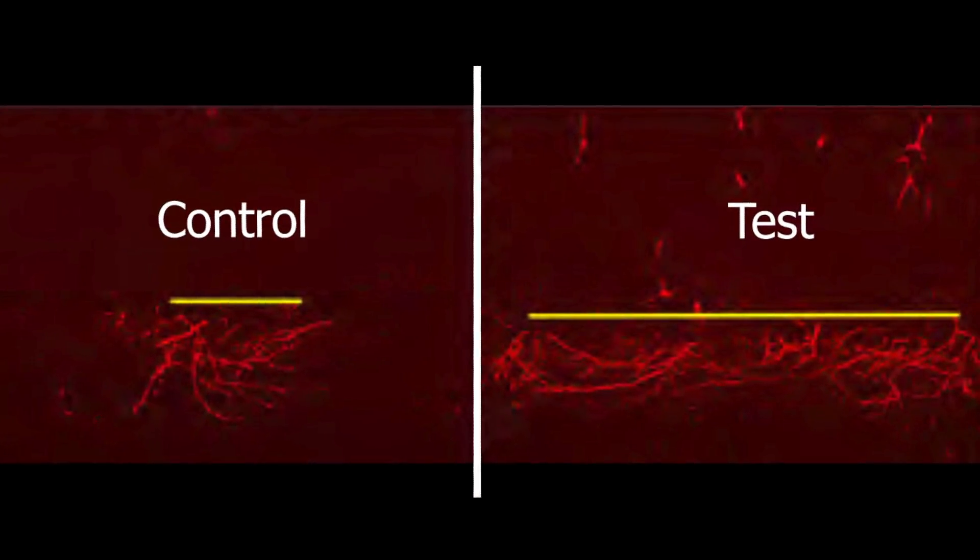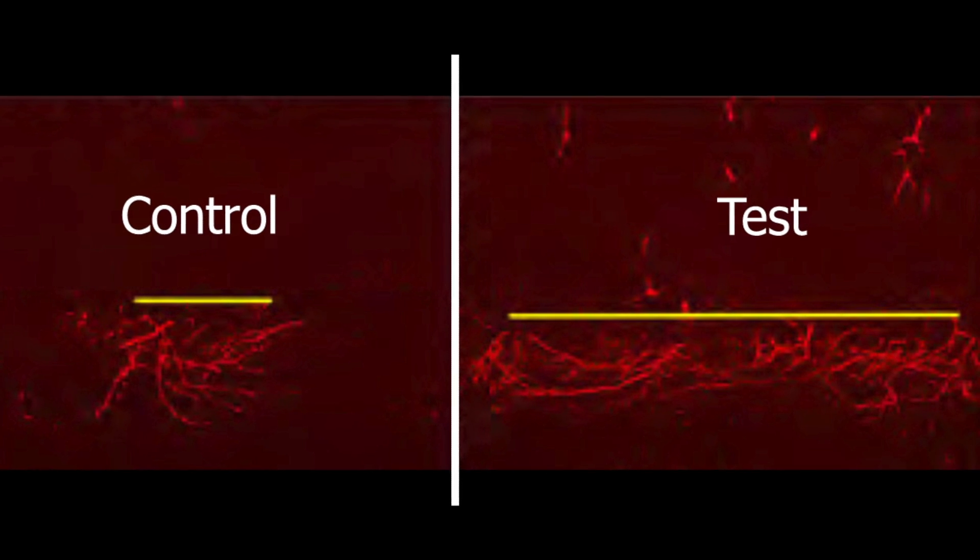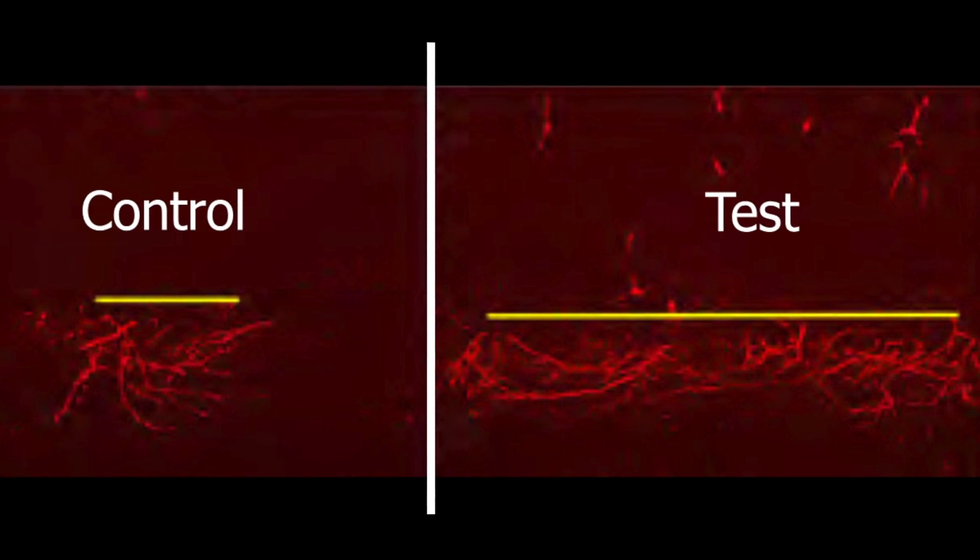the projections actually distort and they become diffuse. And so the circuit basically begins to break down. This then gave us insight into the fact that this constant turnover of new cells coming into this olfactory bulb circuitry is somehow important to maintain the precision of the circuitry.